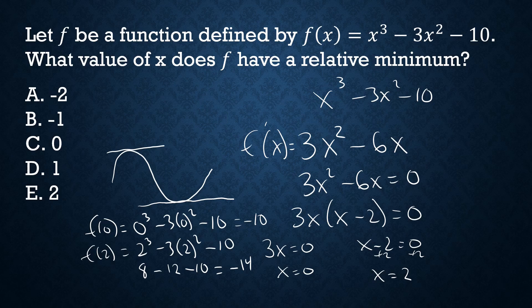And we want the minimum, so negative 14 is less than negative 10. So we have a relative minimum at x equals 2. And also we have a relative maximum at x equals 0.